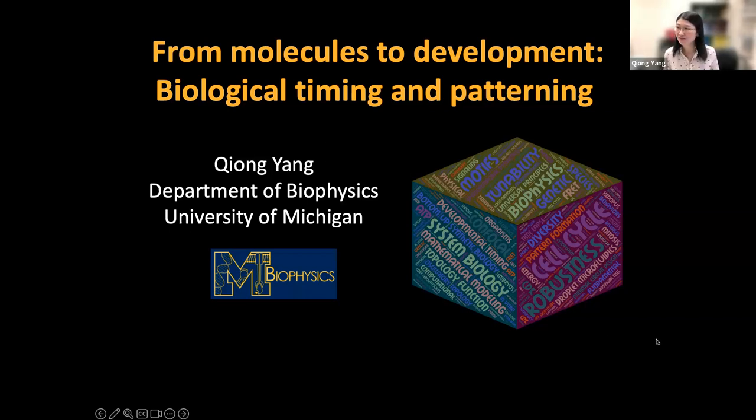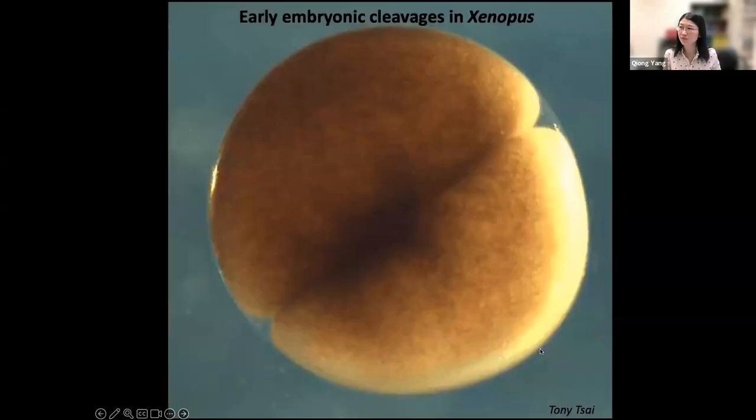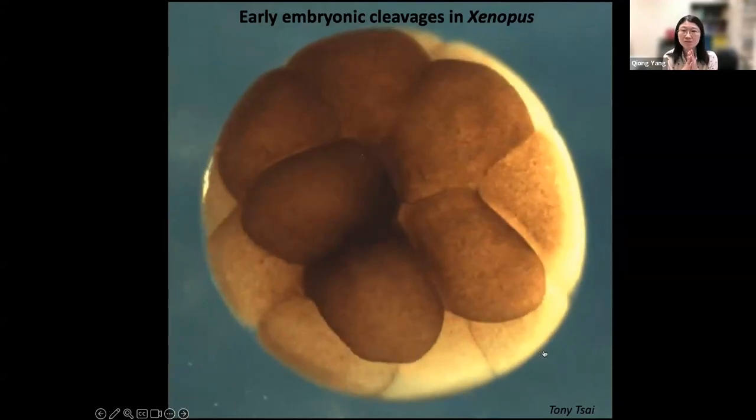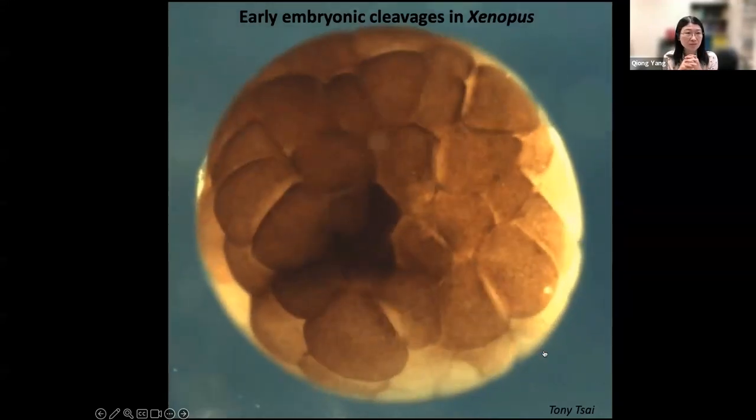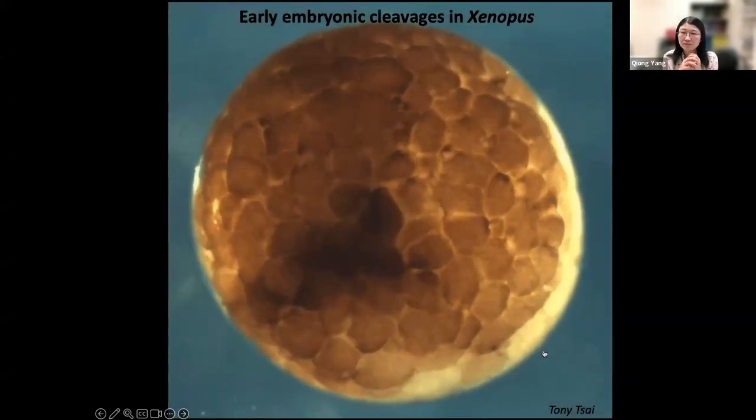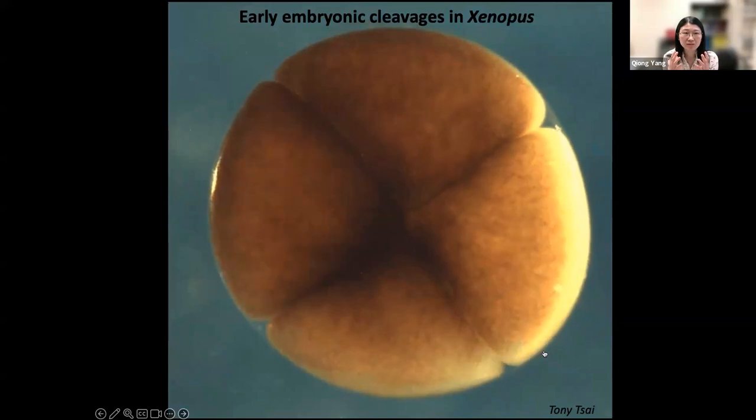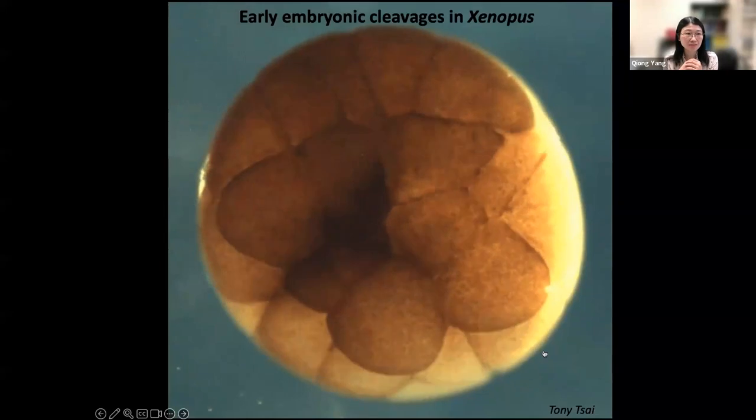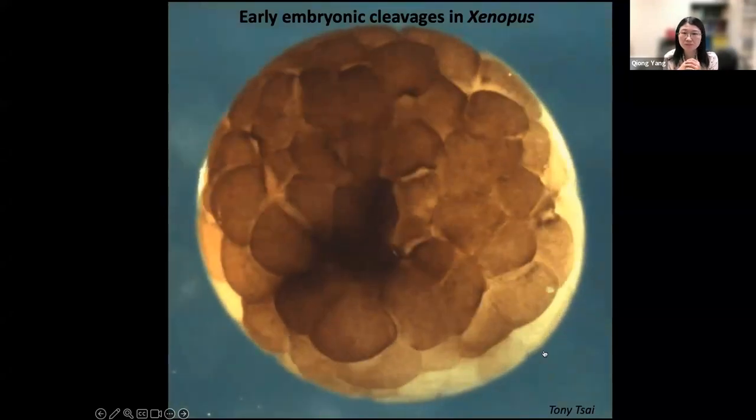Thanks Wiley and thanks to the organizers for the invitation for this very excited seminar series. I want to start my talk by showing you this movie here. This is a single embryo of Xenopus. It starts from one huge cell, about one millimeter in diameter that you can see by naked eyes. After fertilization, it starts to cleave into smaller and smaller cells in a highly synchronized and precise manner, about every 25 minutes per cycle.